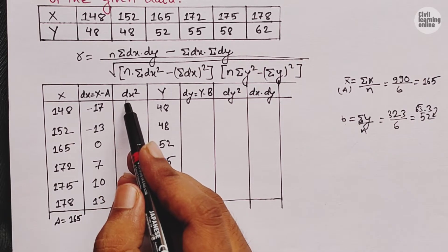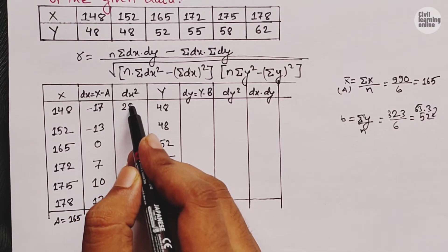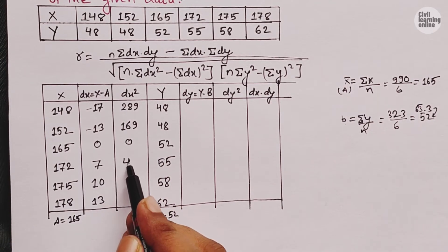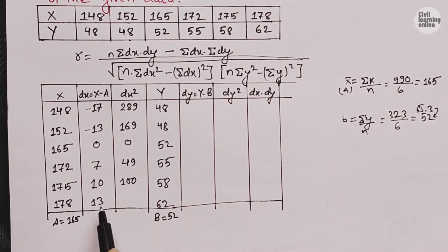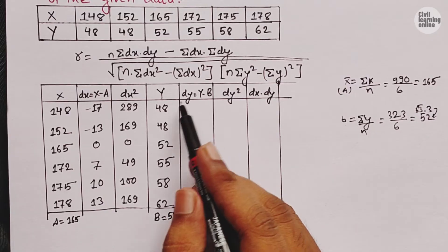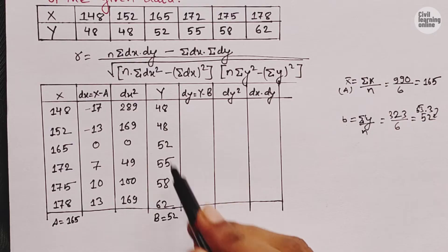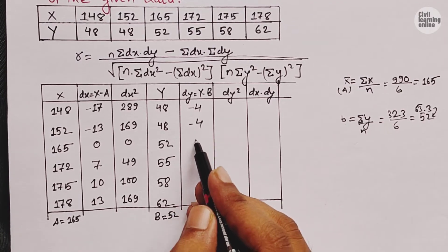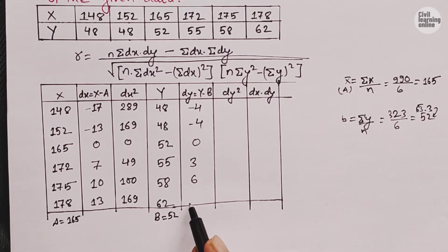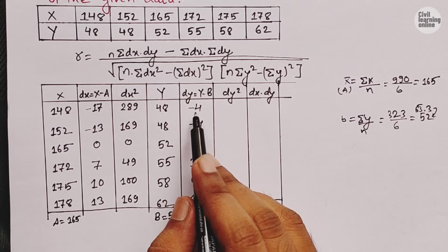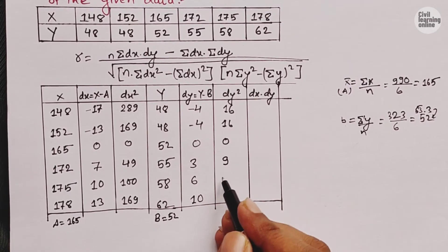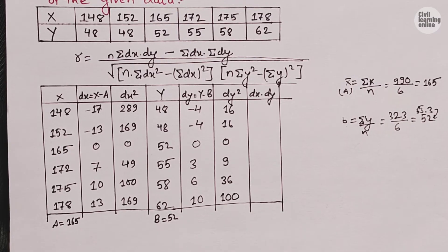Now we calculate dx squared: minus 17 squared is 289, minus 13 squared is 169, 0 squared is 0, 7 squared is 49, 10 squared is 100, and 13 squared is 169. For dy, where dy equals y minus b, we subtract 52 from each y value: 48 minus 52 gives minus 4, again minus 4, then 0, 3, 6, and 10. The dy squared values are: 16, 16, 0, 9, 36, and 100.